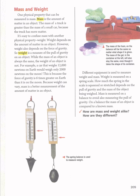Here we have mass and weight. What is the meaning of mass? What is the meaning of weight? Mass and weight are two properties of physical properties. The meaning of mass: mass is the amount of matter in an object. For example, if you have a box full of material, the objects inside the box represent mass. Mass depends on the amount of matter in an object. The mass of a truck is greater than the mass of a small car because the truck has more matter in it.